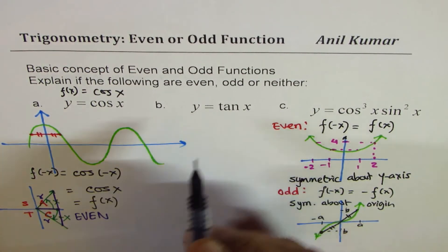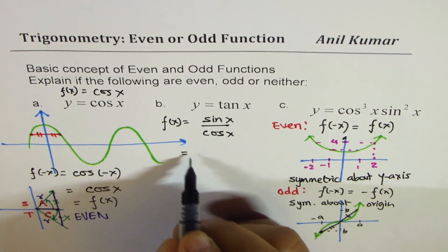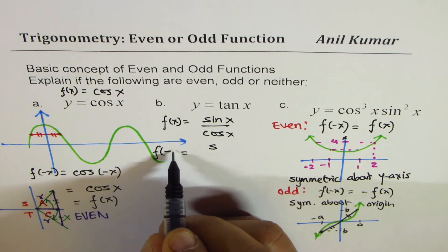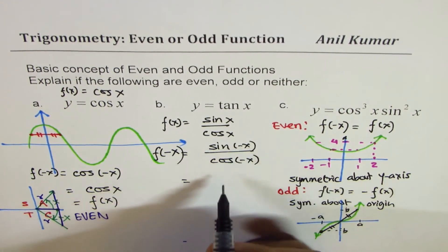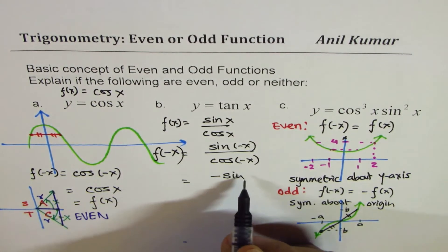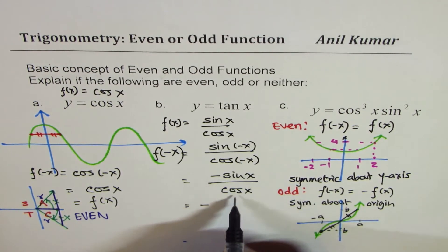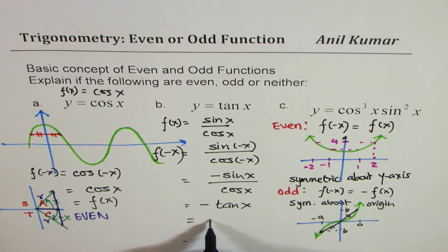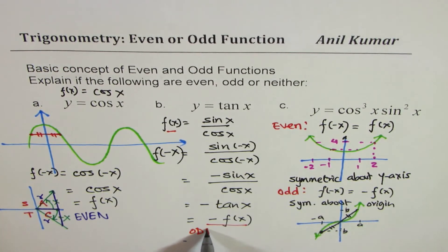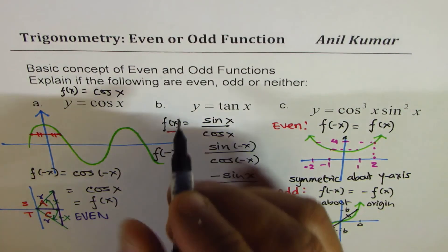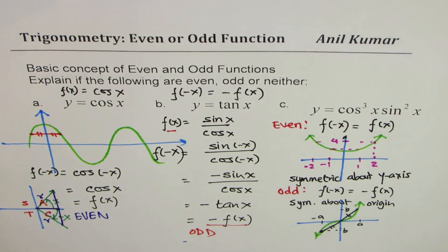Now let's take f(x) = tan x, which we can write as sin x over cos x. Replacing x with -x gives f(-x) = sin(-x) / cos(-x). We know sin(-x) = -sin x, and cos(-x) = cos x. So f(-x) = -sin x / cos x = -tan x = -f(x). Since f(-x) = -f(x), tan x is an odd function.